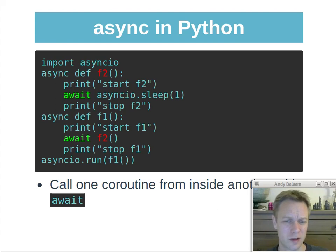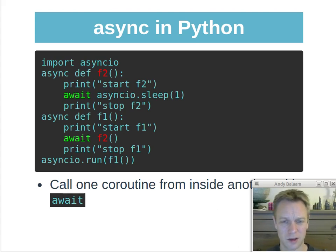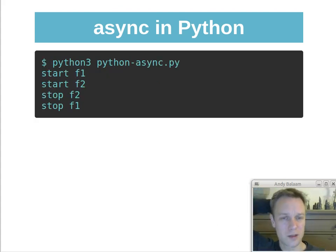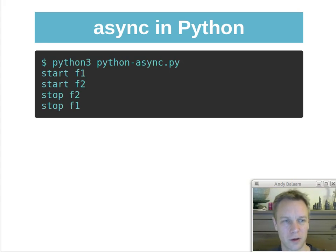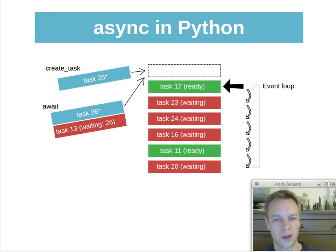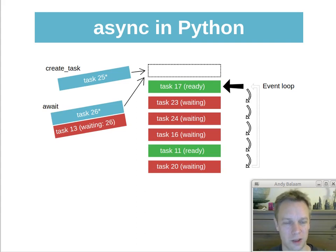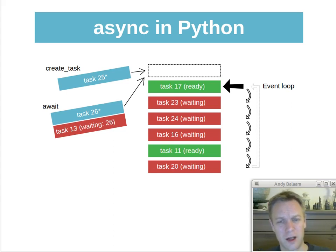I know this is tricky — one of the reasons I'm making this video is that most stuff in Python is pretty straightforward and you don't need a video explaining it. This stuff took me a while to get my head around. I ended up writing a series of blog posts, and this video is a summary of those. There's a link in the slides and show notes to the blog posts which go into a lot more detail. When we run the code from the previous slide: F1 starts, then as part of running F1 we wait for F2, so F2 gets started, then F2 finishes, and F1 can finish.